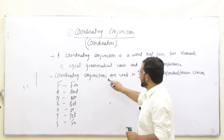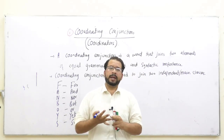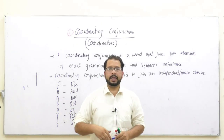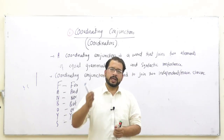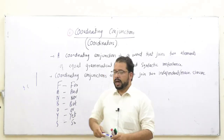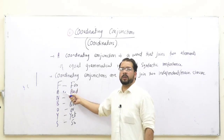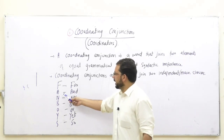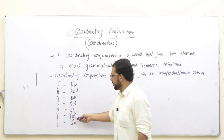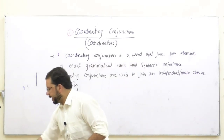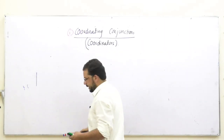Then the second definition is: coordinating conjunctions are used to join two independent or main clauses. Hamare paas clauses ko hum mainly independent or dependent clause mein divide kar dete hain. Independent or dependent clauses pe main alag ek lecture arrange karunga jiske zariye se phir aapka classes ke bare mein jo concept hoga woh bhi clear ho jayega. Hamare paas coordinating conjunctions basically saat hain, jiske liye hum ek abbreviation use karte hain jisko hum kehte hain FANBOYS. FANBOYS mein F ka matlab hai 'for', A ka matlab hai 'and', N ka matlab hai 'nor', B ka matlab hai 'but', O ka matlab hai 'or', Y ka matlab hai 'yet', aur S ka matlab hai 'so'.